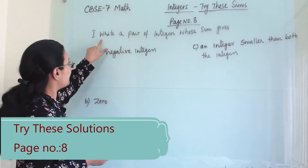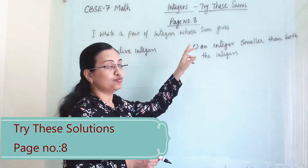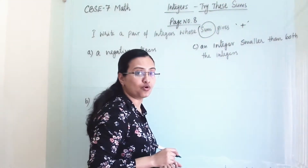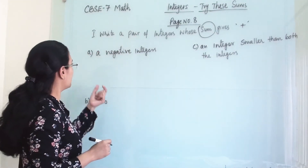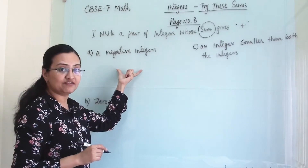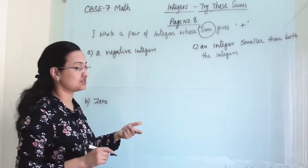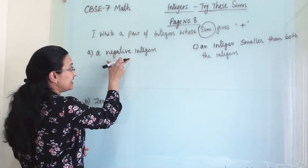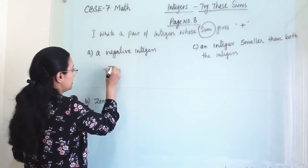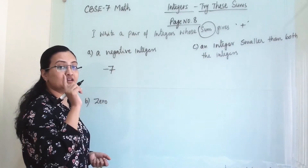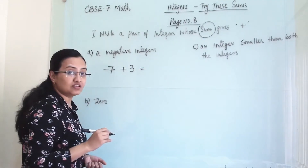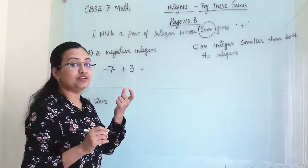The first question asks us to write a pair of integers whose sum gives a negative integer. That means we have to perform addition on two integers and the result should be a negative integer. We will get a negative integer from addition when the bigger number carries the negative sign.